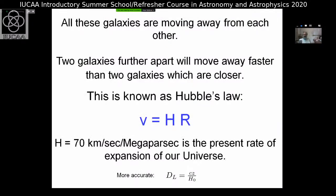One of the beautiful things about the universe, realized almost exactly a hundred years ago by Hubble, was that galaxies move away from each other. The further galaxies are, the faster they move away from each other. This is known as Hubble's law.